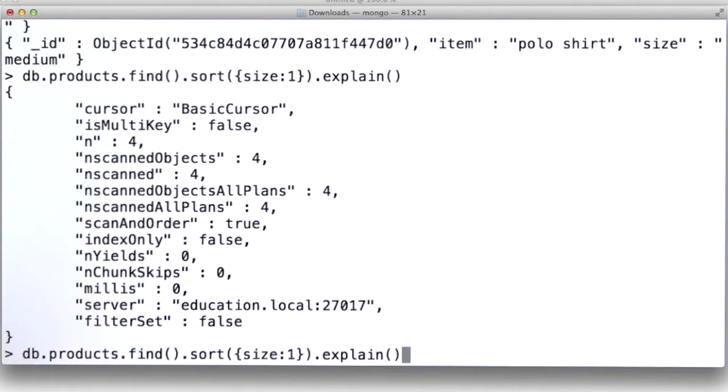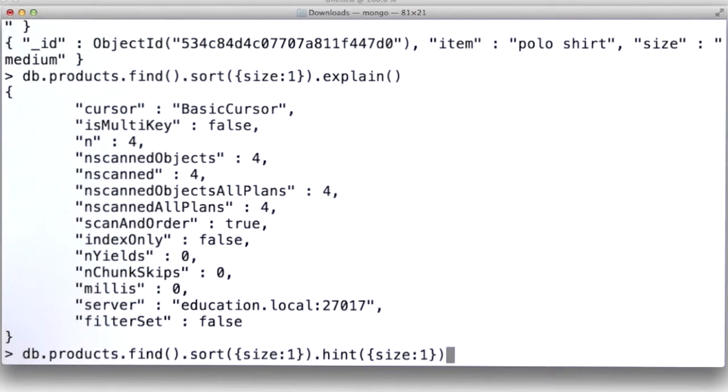What if we deliberately hinted and said we wanted to use the index on size ascending? Now, if we did that, then we only get two documents back.